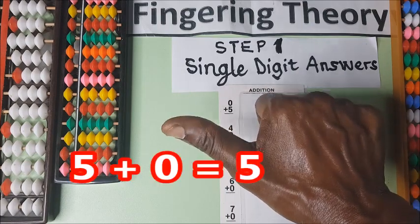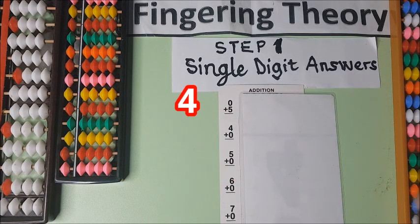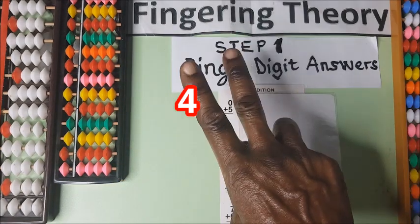Plus zero is the same five, so five plus zero is five. And then four: one, two, three, four on the right hand is four.